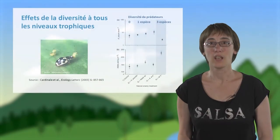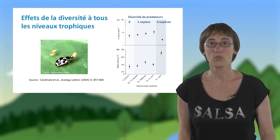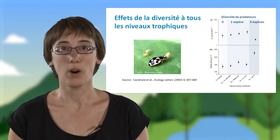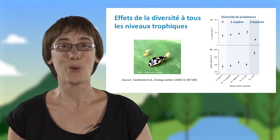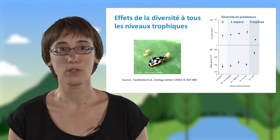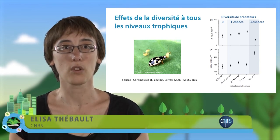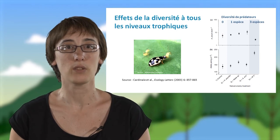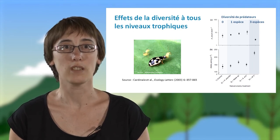Un dernier exemple montre les effets de la diversité des prédateurs d'un puceron sur l'abondance des pucerons et l'abondance des plantes dans un agroécosystème. Sur le graphique en haut à droite, on peut voir que la diversité des prédateurs mène à une diminution de l'abondance des pucerons. Sur le graphique en bas, par contre, on peut voir que l'abondance de la plante, ici la luzerne, est plus importante à plus forte diversité de prédateurs. Cet exemple montre que la diversité de prédateurs et à d'autres niveaux trophiques va avoir un effet dans les écosystèmes, mais également que ces effets peuvent avoir des conséquences en termes de gestion, par exemple dans le cas des agroécosystèmes.